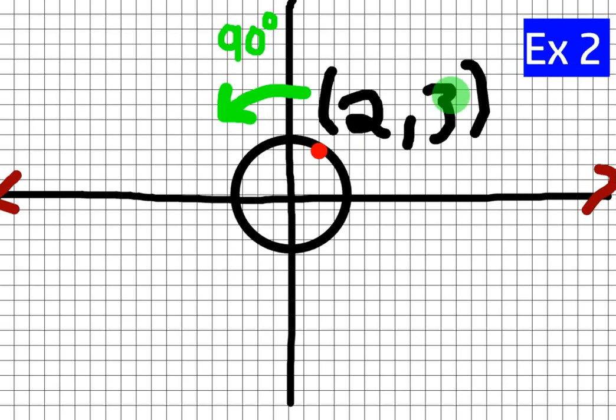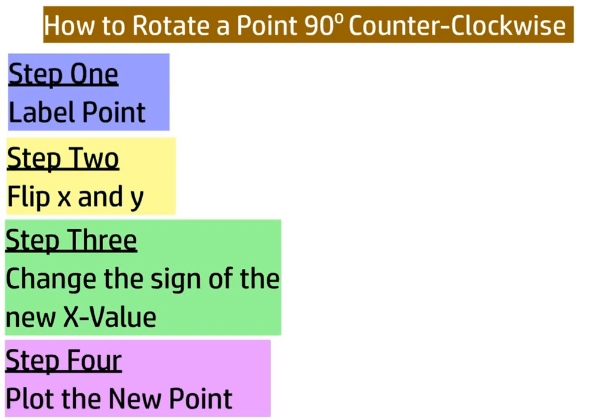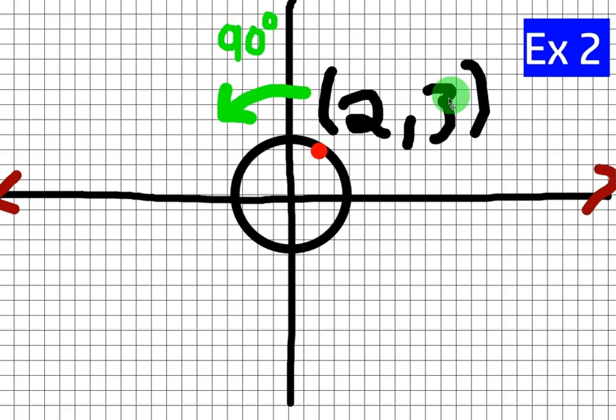So step one, like I talked about in the previous example, is to label your points or a point, depending on whether it's a shape or a point. Okay, so we have labeled that point already. Again, these are the steps for rotating a point 90 degrees counterclockwise. Let's go ahead and label that point. Alright, so this point is 2, 3, and that's easy for the first step, right?